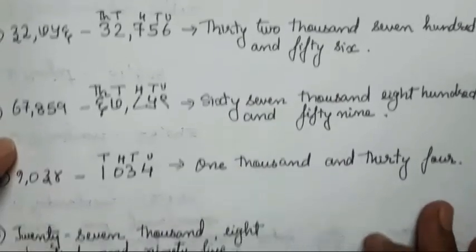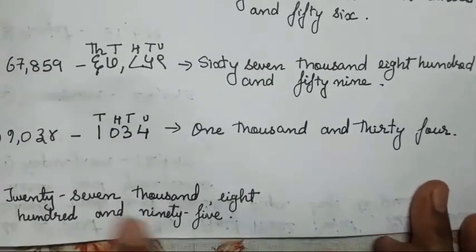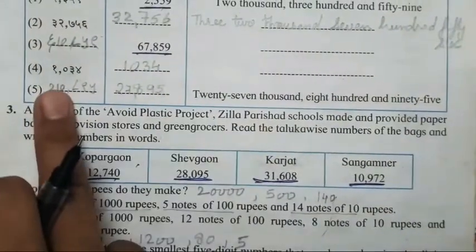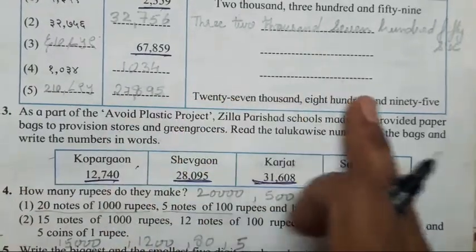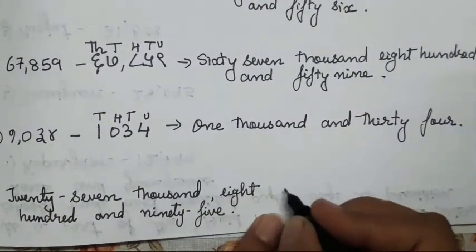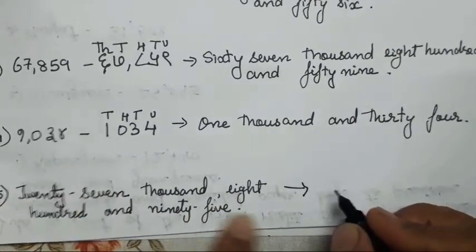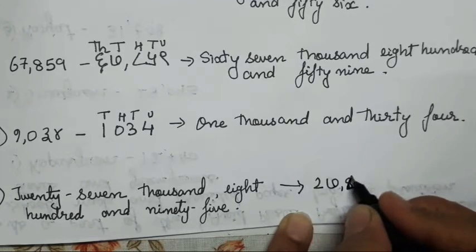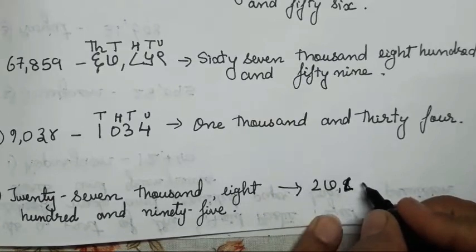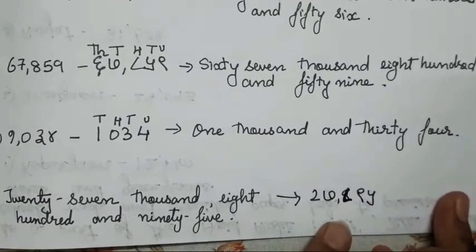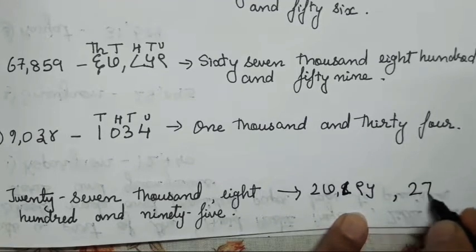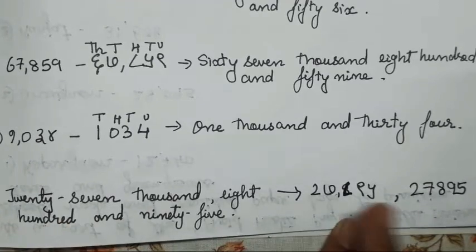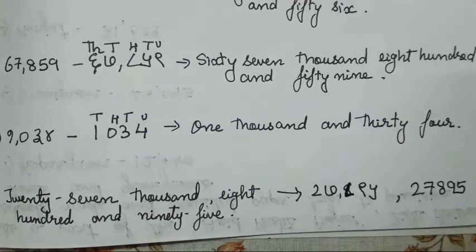Now the fifth one: fifty seven thousand eight hundred and ninety five — this is the last question they have given. We have to write the Devanagari script and the international one. When the words have been given, first we will write in Devanagari: twenty seven thousand — eight hundred and ninety five. Same thing you all have to write in international numbers — that is 27895. This kind of question can come for two marks.